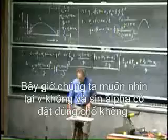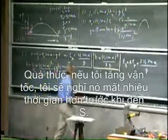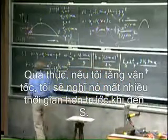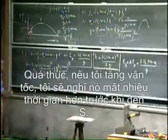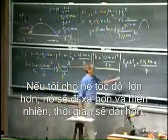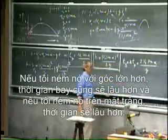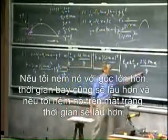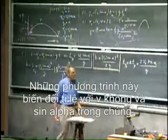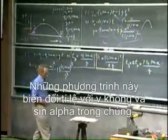Now we want to check whether V₀ and sinα appear in the right place. If I increase the speed, I would expect it to take longer before it reaches S — a larger speed means it comes out farther, and obviously the time will be longer. A higher angle will also take longer, and on the moon it will also take longer. So this makes sense. These equations are pleasing in terms of the way that V₀ and sinα appear.